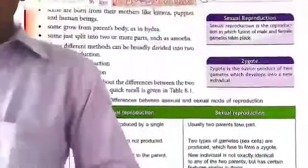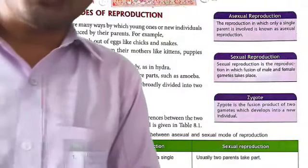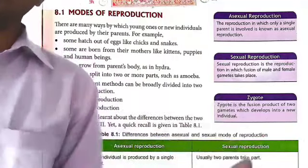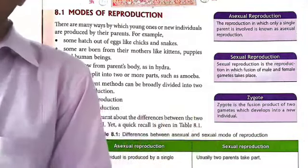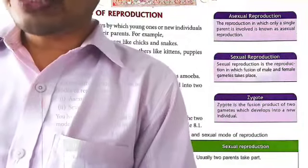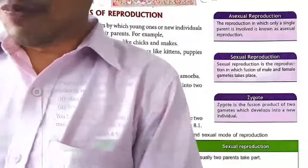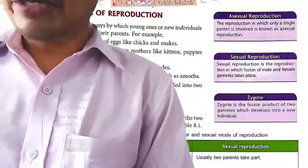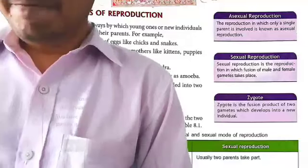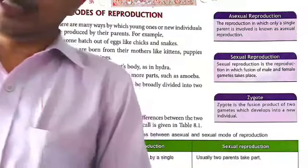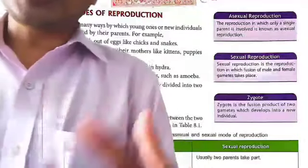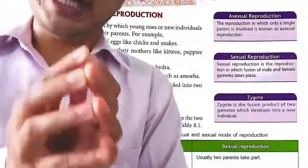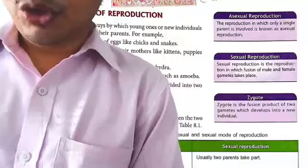Next is sexual reproduction. Sexual reproduction involves multicellular organisms — both male and female. The gametes are fused to form a zygote. The gametes fuse and they develop into a new individual — that is the zygote. In sexual reproduction, male and female gametes fuse to form the same type of new individual.